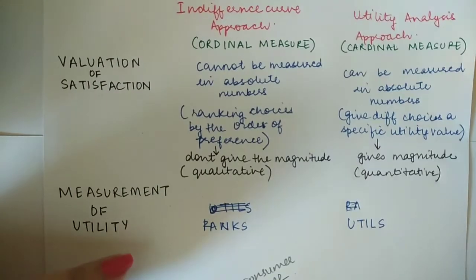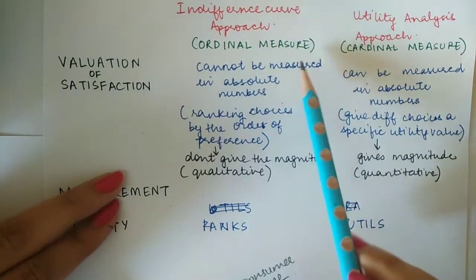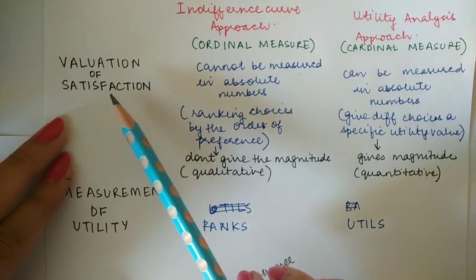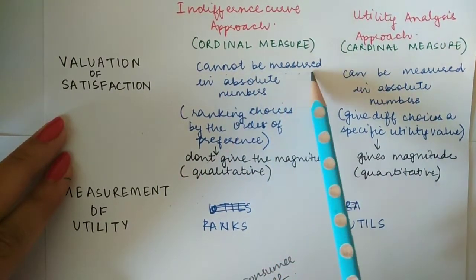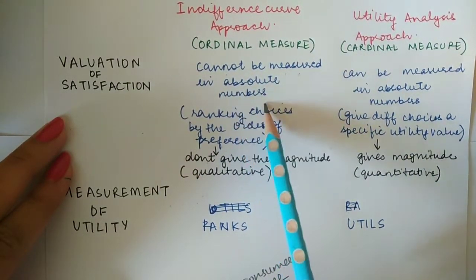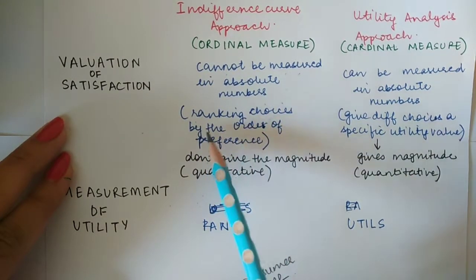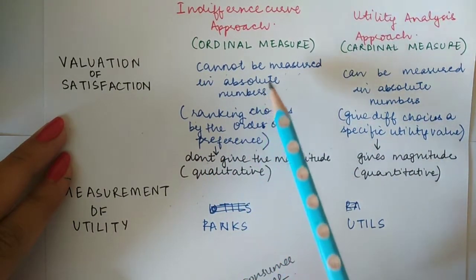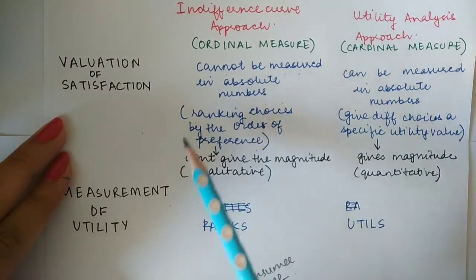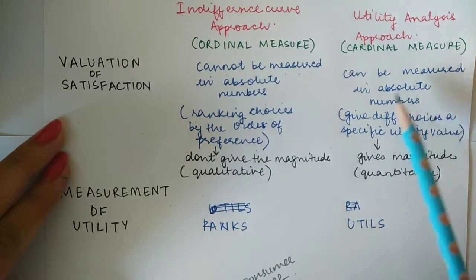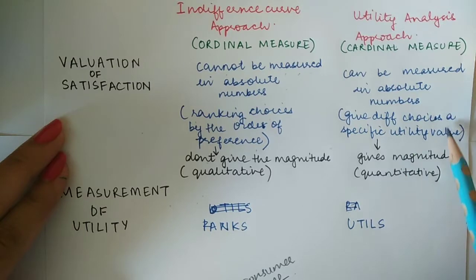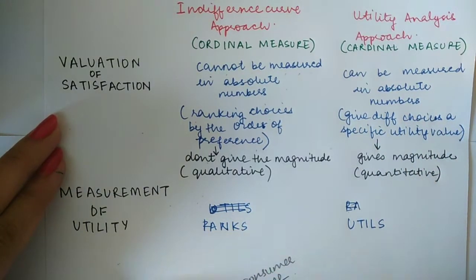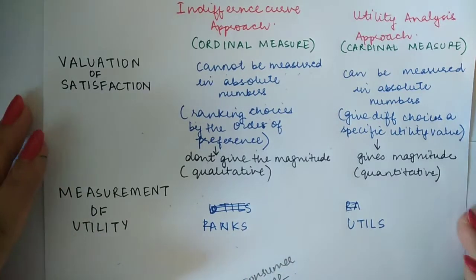This is called the ordinal measure of measuring utility. The utility cannot be measured in absolute terms here because you rank the choices by the order of preferences. So the utility is not measured in utils as in the Marshallian approach; instead, the measurement of utilities is in ranks.